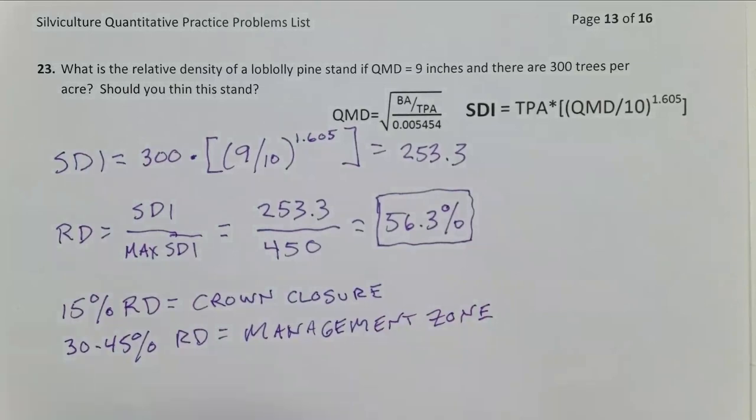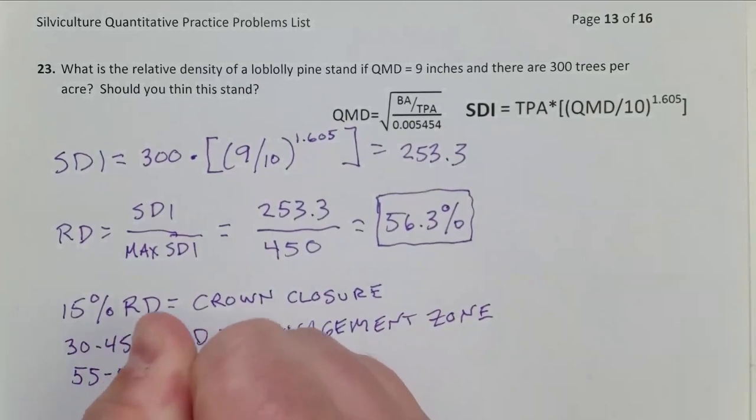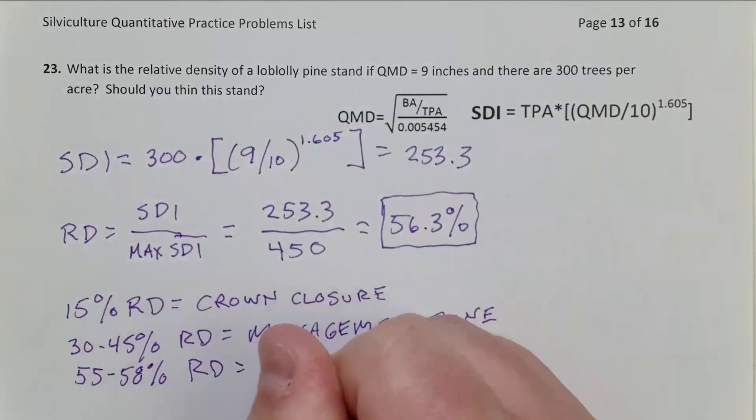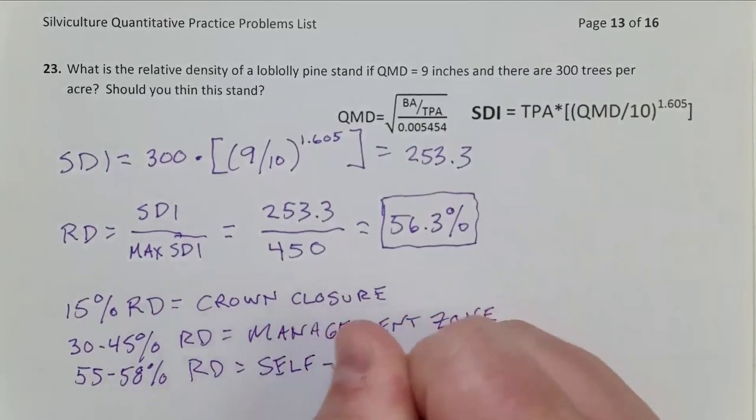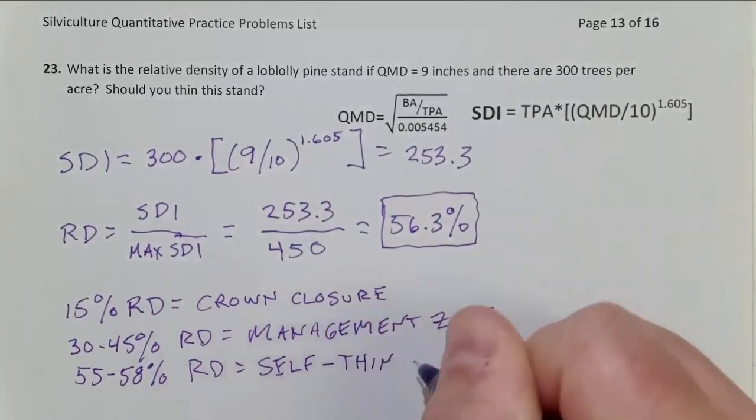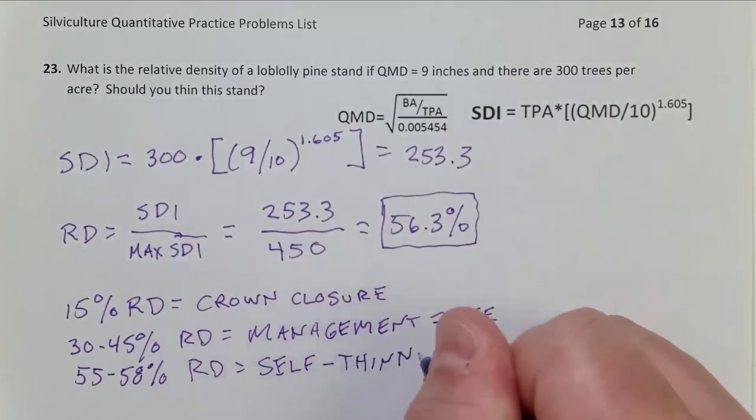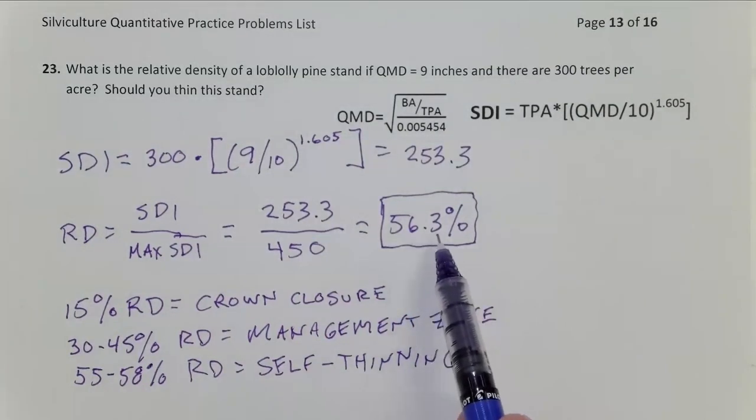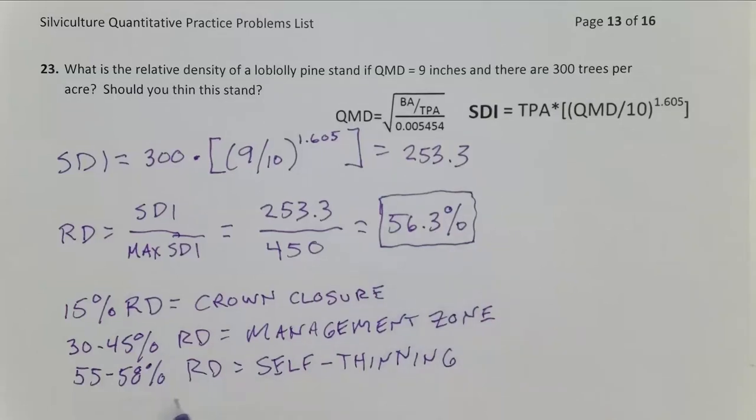And finally, one of the most important numbers, when you look at the range of about 55 to 58 percent, somewhere in there is going to be the onset of self-thinning. That's where density-dependent mortality will be occurring. So once we see this, what we know from this relative density, 56.3 percent, we expect that stand to start self-thinning. Trees are going to be dying by out-competing their neighboring trees.